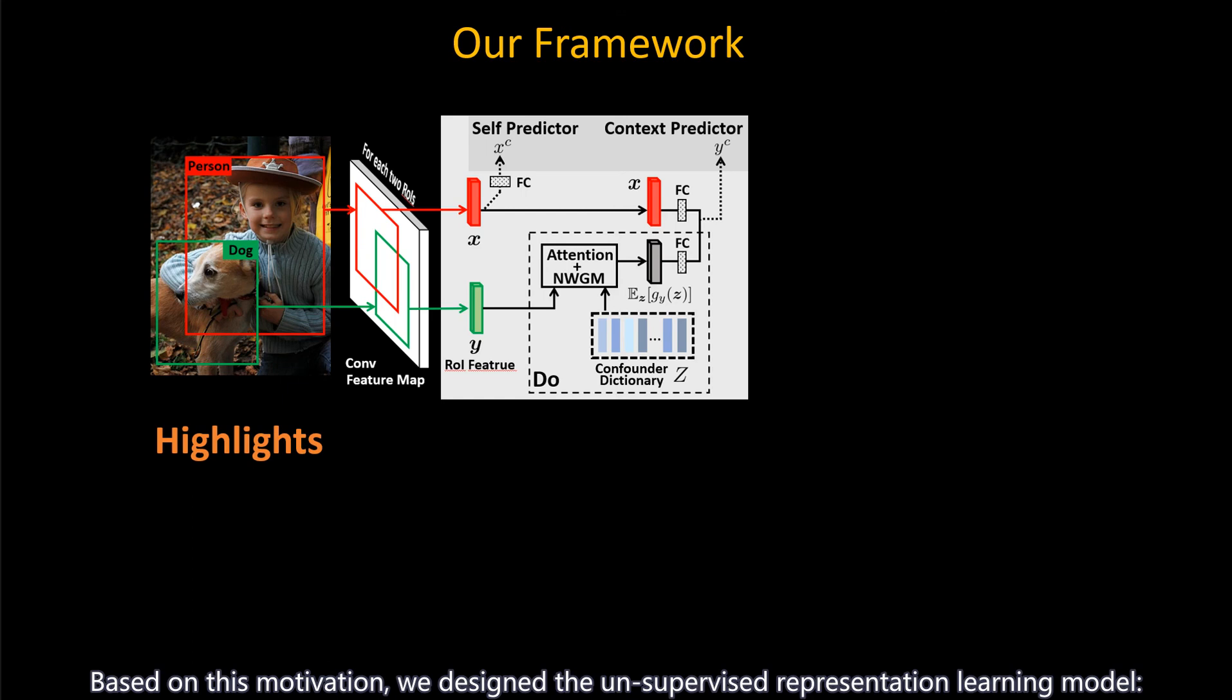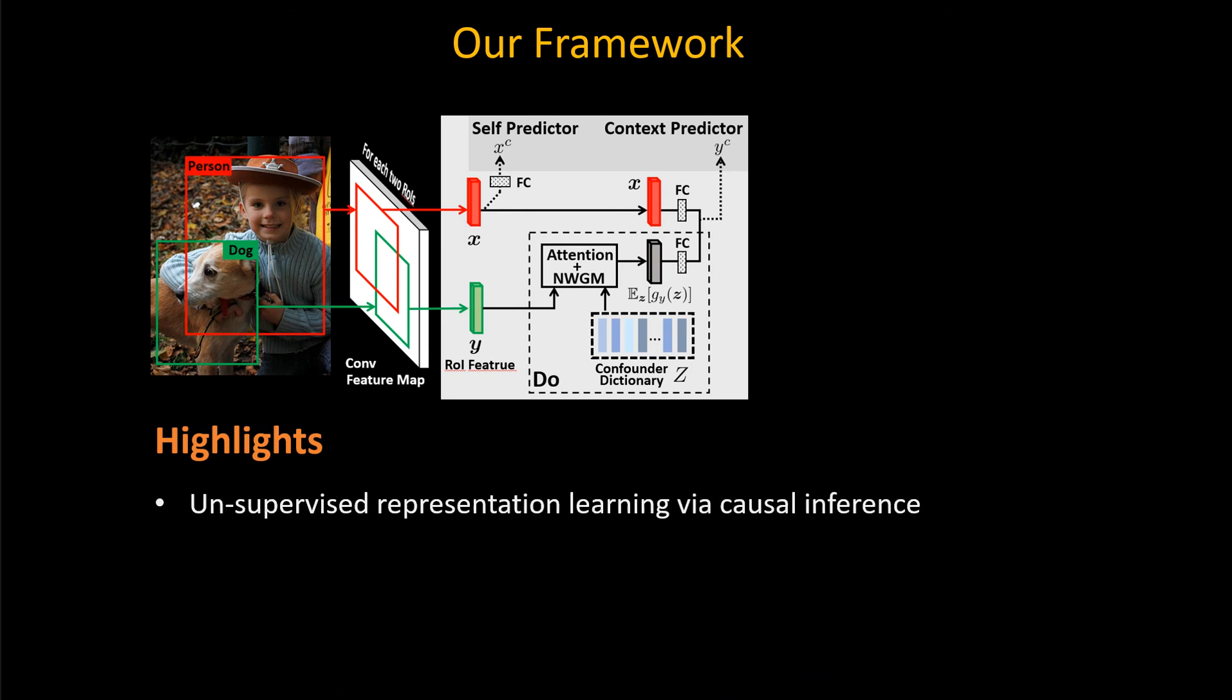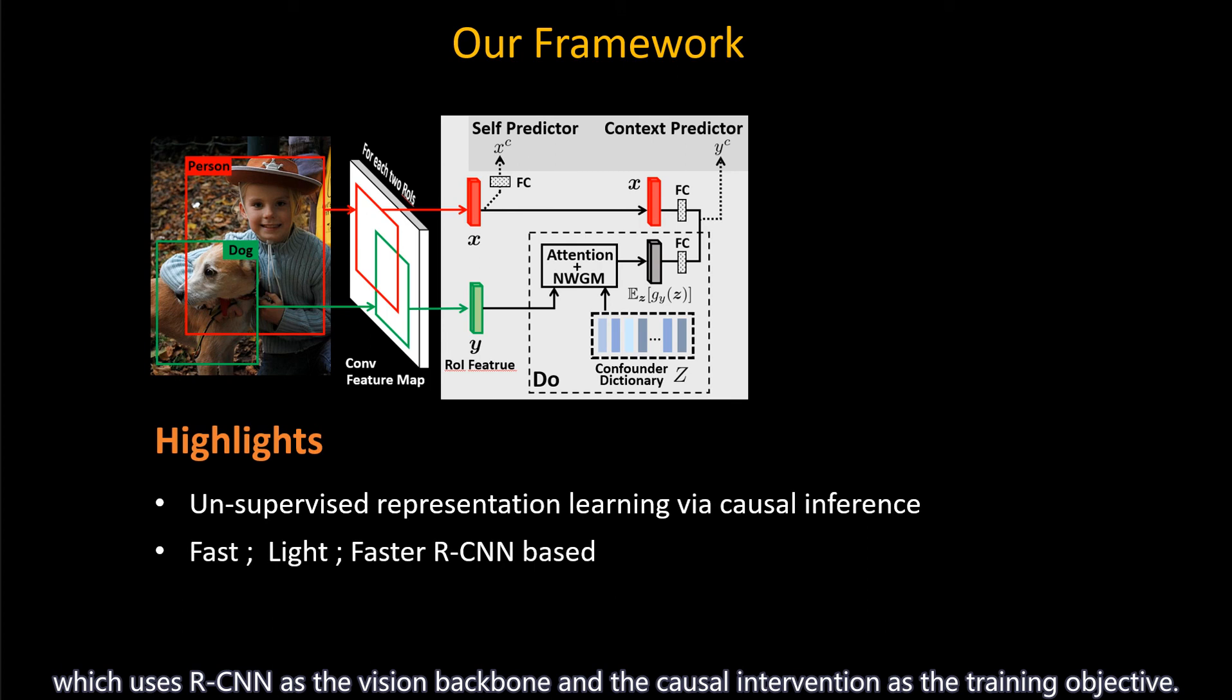Based on this motivation, we designed the unsupervised representation learning model, Visual Common Sense RCNN, VC-RCNN, which uses RCNN as the vision backbone, and the causal intervention as the training objective.